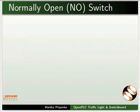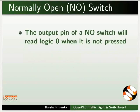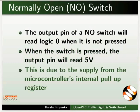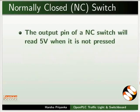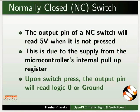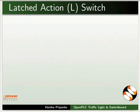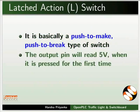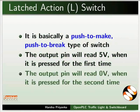The output pin of a NO switch reads logic 0 when not pressed; when pressed, it reads 5V due to the microcontroller's internal pull-up resistor. The output pin of a NC switch reads 5V when not pressed, also due to the internal pull-up resistor; upon switch press, it reads logic 0 or ground. A latched action switch is a push-to-make, push-to-break type: the output pin reads 5V when pressed the first time, and 0V when pressed the second time. The LED behavior of a latched action switch corresponds to that of a NO switch.